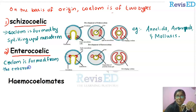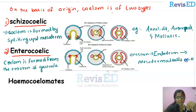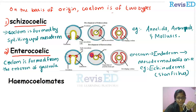In enterocoelic animals, the coelom is formed from the enteron of the gastrula. The mesoderm is formed from the enteron or endoderm, and then the coelom is formed from that mesoderm. Examples of enterocoelic animals are echinoderms, which is the group of starfishes.